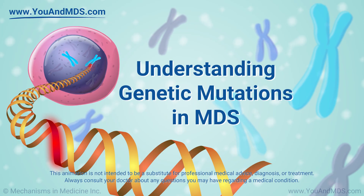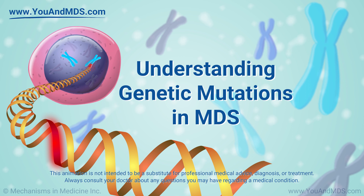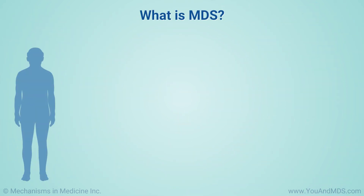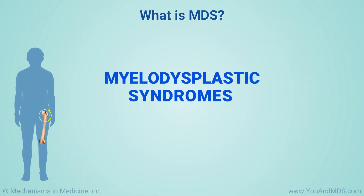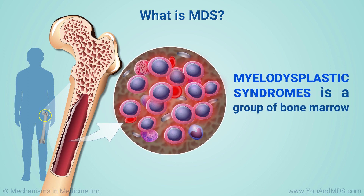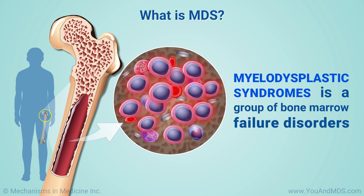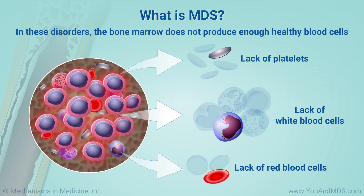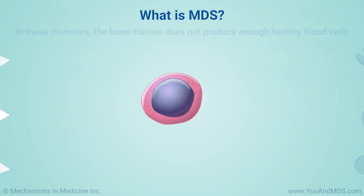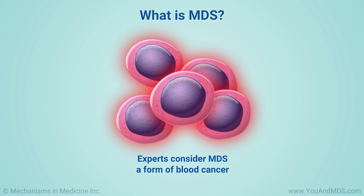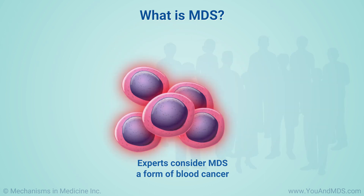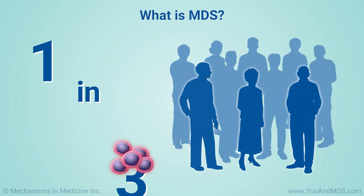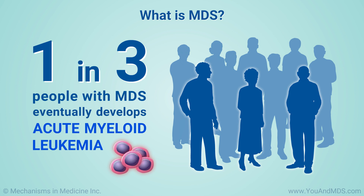MDS stands for myelodysplastic syndromes. It is the name of a group of bone marrow failure disorders. In these disorders, the bone marrow does not produce enough healthy blood cells. Experts consider MDS a form of blood cancer. About one in three people with MDS eventually develops acute myeloid leukemia.